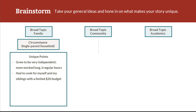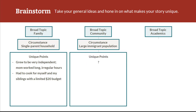Let's say as a part of my brainstorming process, I've selected community and academics as two additional broad topics — both topics I could delve deeper into to talk about factors that have influenced me personally. As the example student, my community is a general factor that has been influential to me. Particularly, the fact that it has a large immigrant population is something that has been very significant. But that's still very general, and many students may write about their diverse communities being influential.